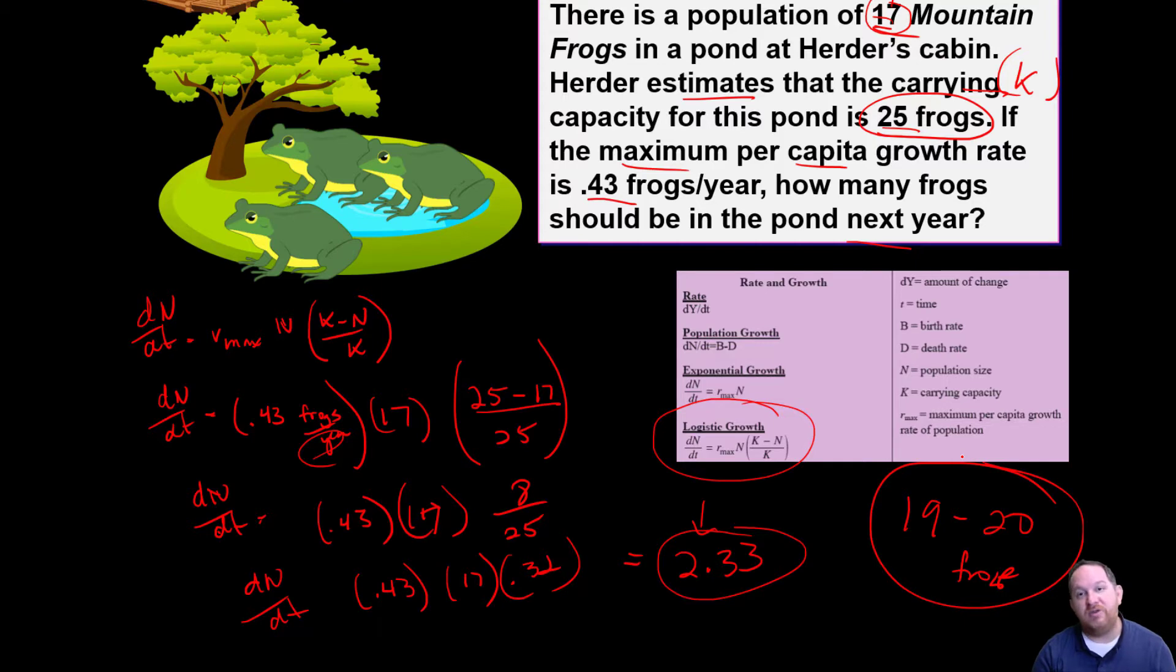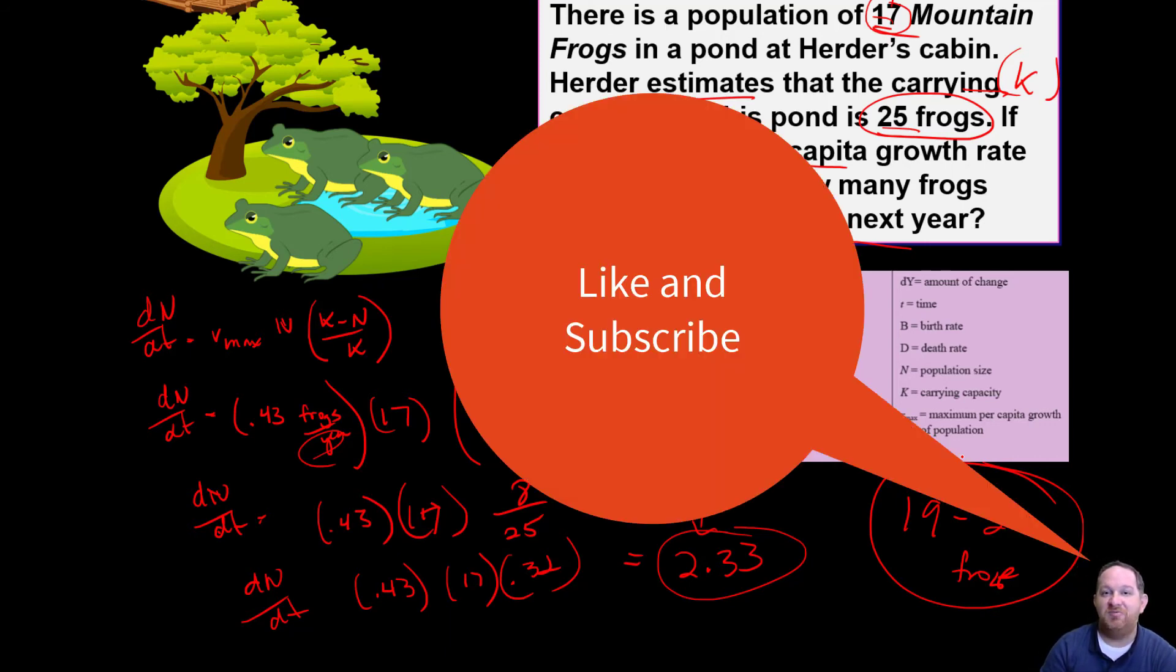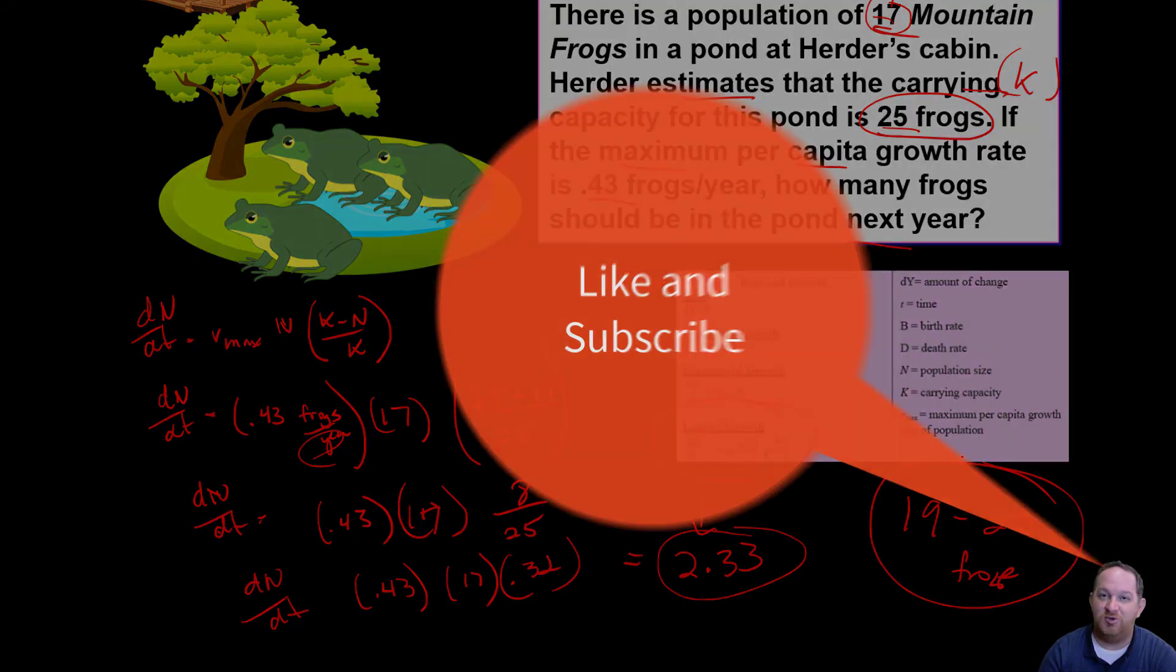Hopefully this video helps you learn how to do some of these problems where you're calculating growth and population rate change. We talked about frogs and fish. One of the bigger questions that you might start to consider now is, what does this mean for humans on the earth? Do humans have a carrying capacity? Are we at our carrying capacity? Have we reached it? What can our population sustain? Maybe we need to do some math and figure it out. Hopefully you found this information helpful. If you did, click like and subscribe so Herder will continue making videos for you.